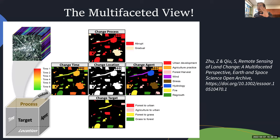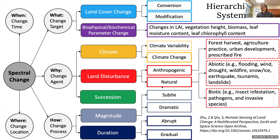For example, we can know the change location, the change time, the change process, the change agent, or the change target. Those domains are not always the same spatially. For example, you can have a change happen showing up in the change location, but it may not show up in the change target, because based on how you define your target, it may or may not be a change. This is the first time we put all those different phases of land change in the remote sensing perspective in one figure, and we want to put this hierarchical system so that each kind of change aspect has its own location.